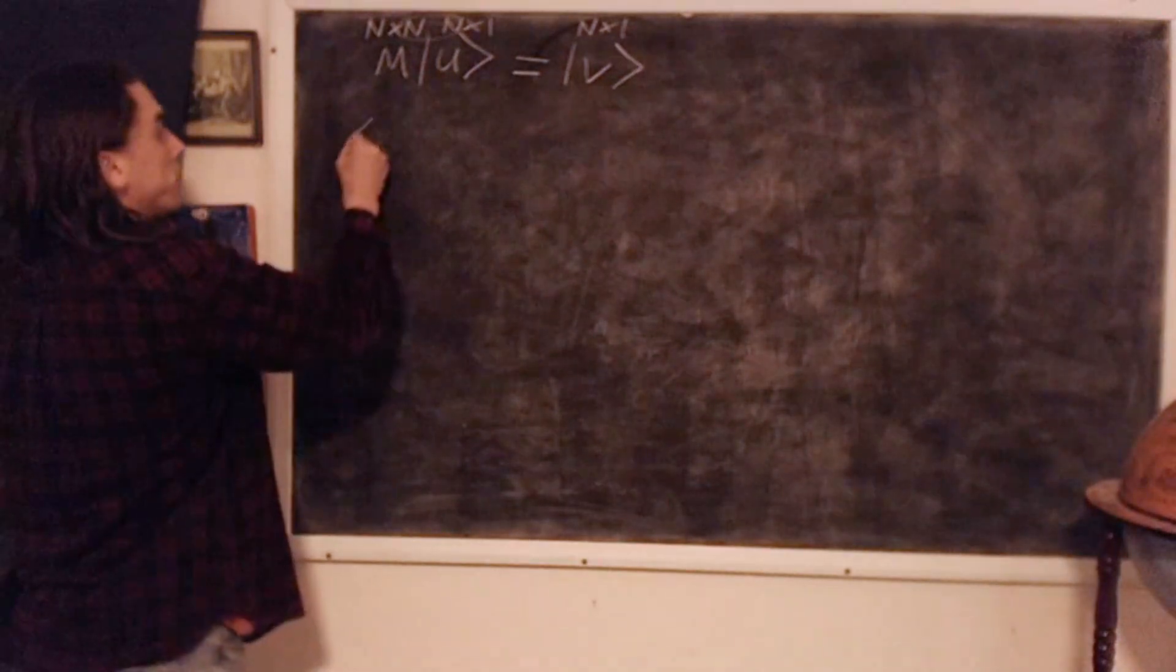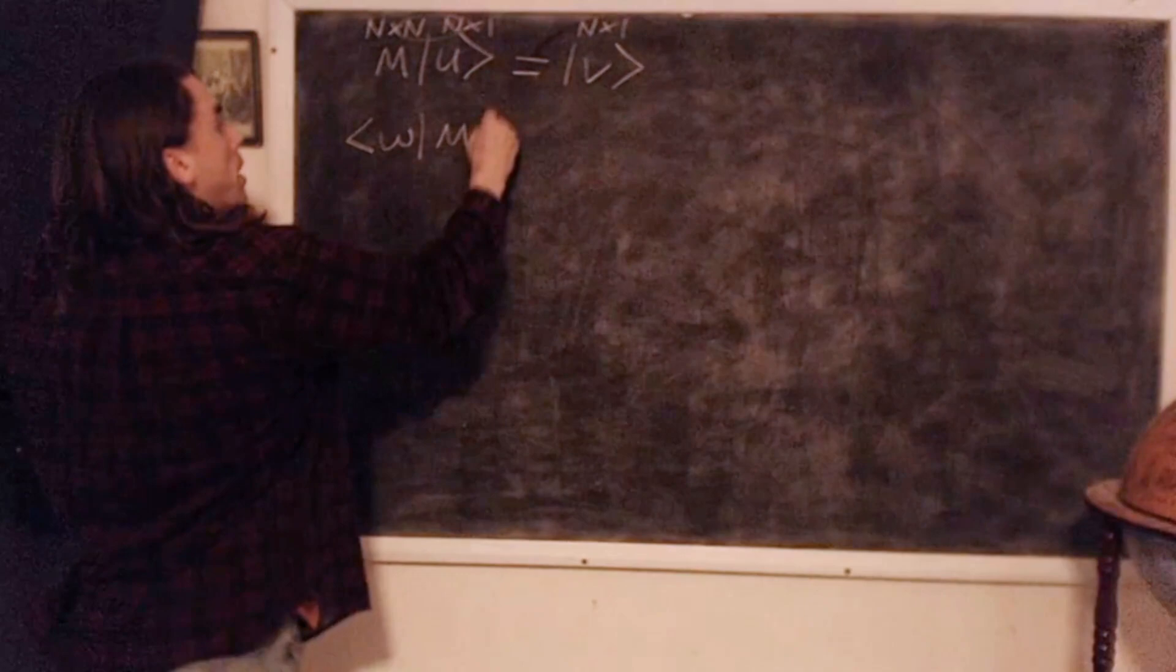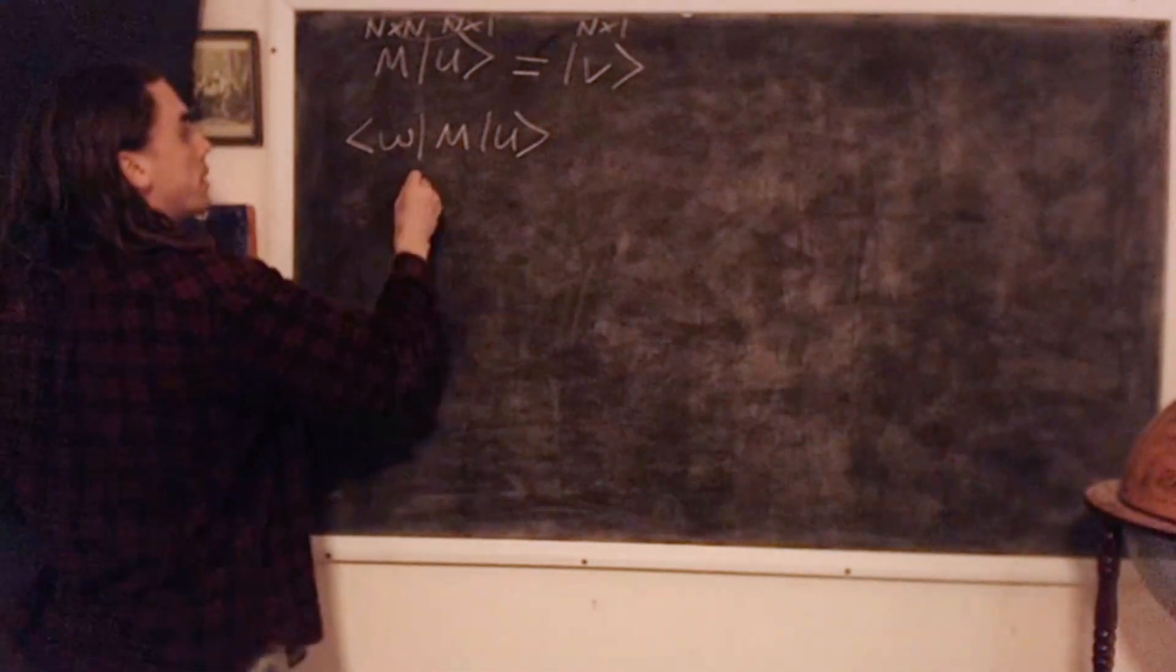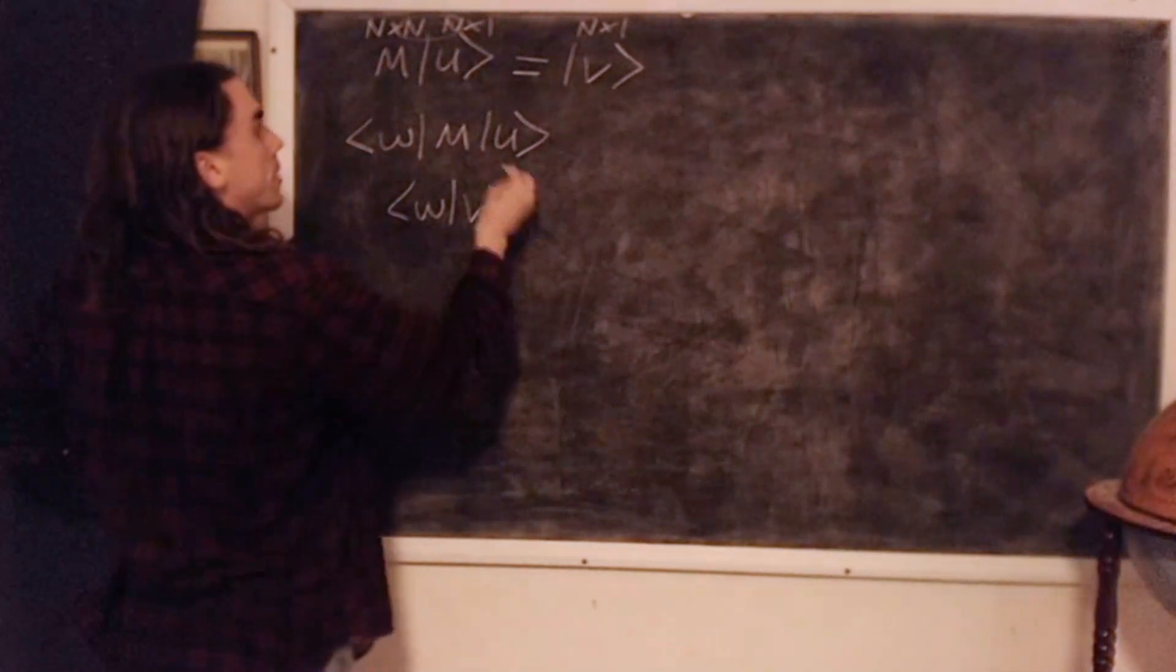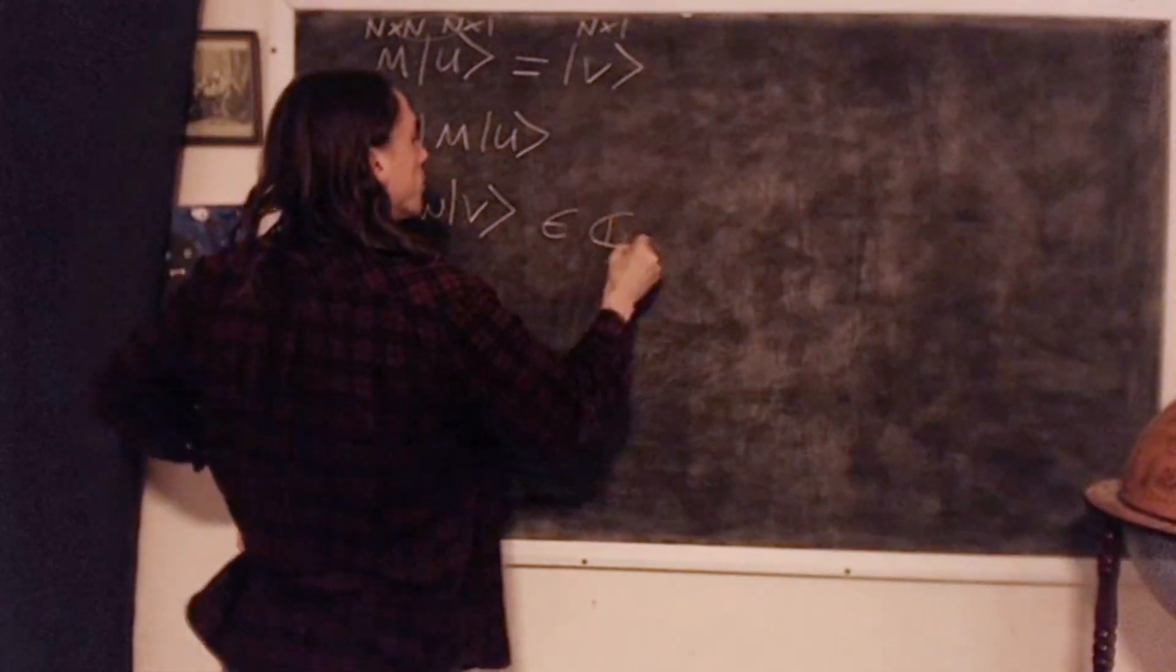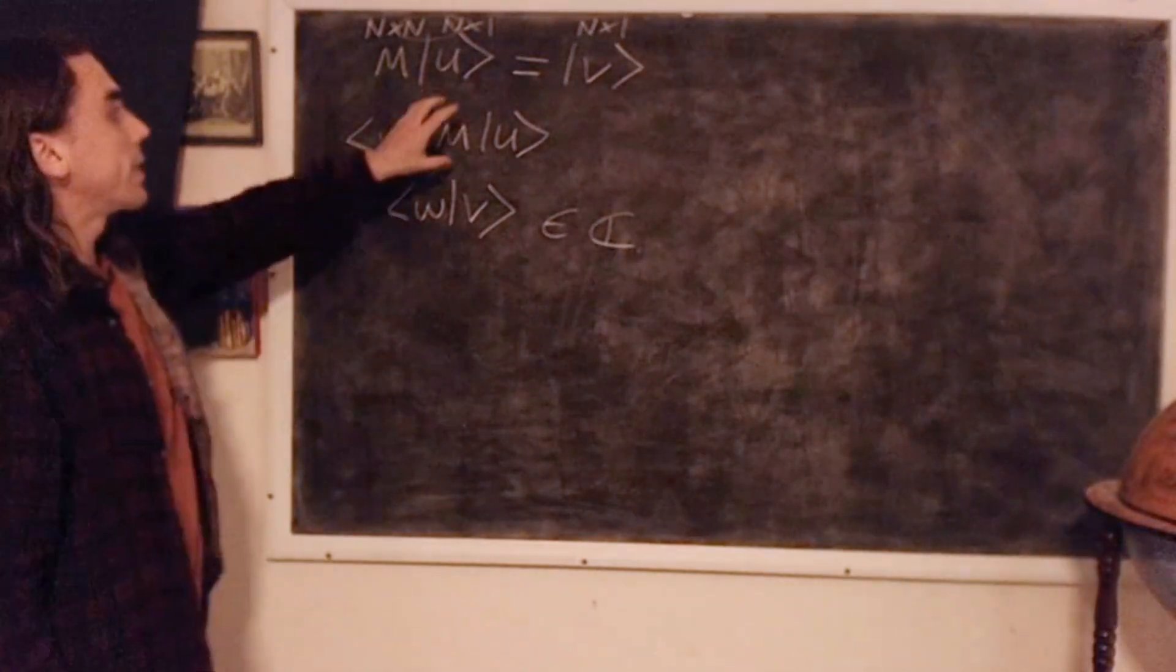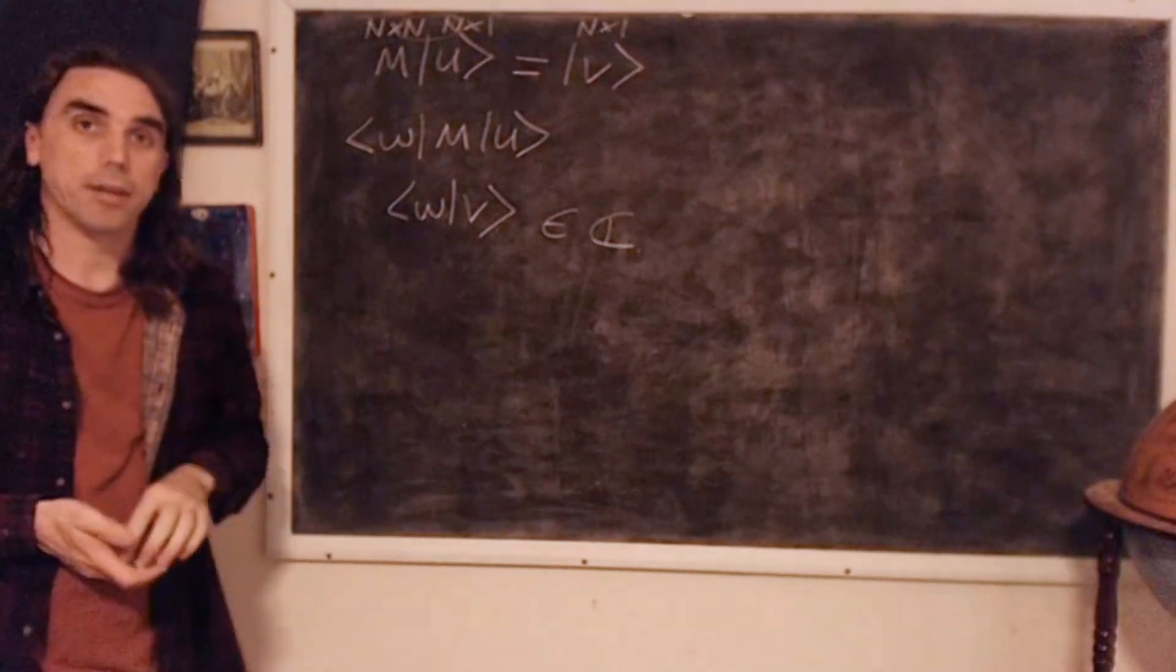Now consider the inner product. Let's take another vector, W, act it on M U. What do we do? Well, this thing must, by definition, equal W inner product V, because M U is just V. And so this thing is a complex scalar. So that's also good news. We can act matrices on our vectors and we can take inner products and everything works out as we'd expect.